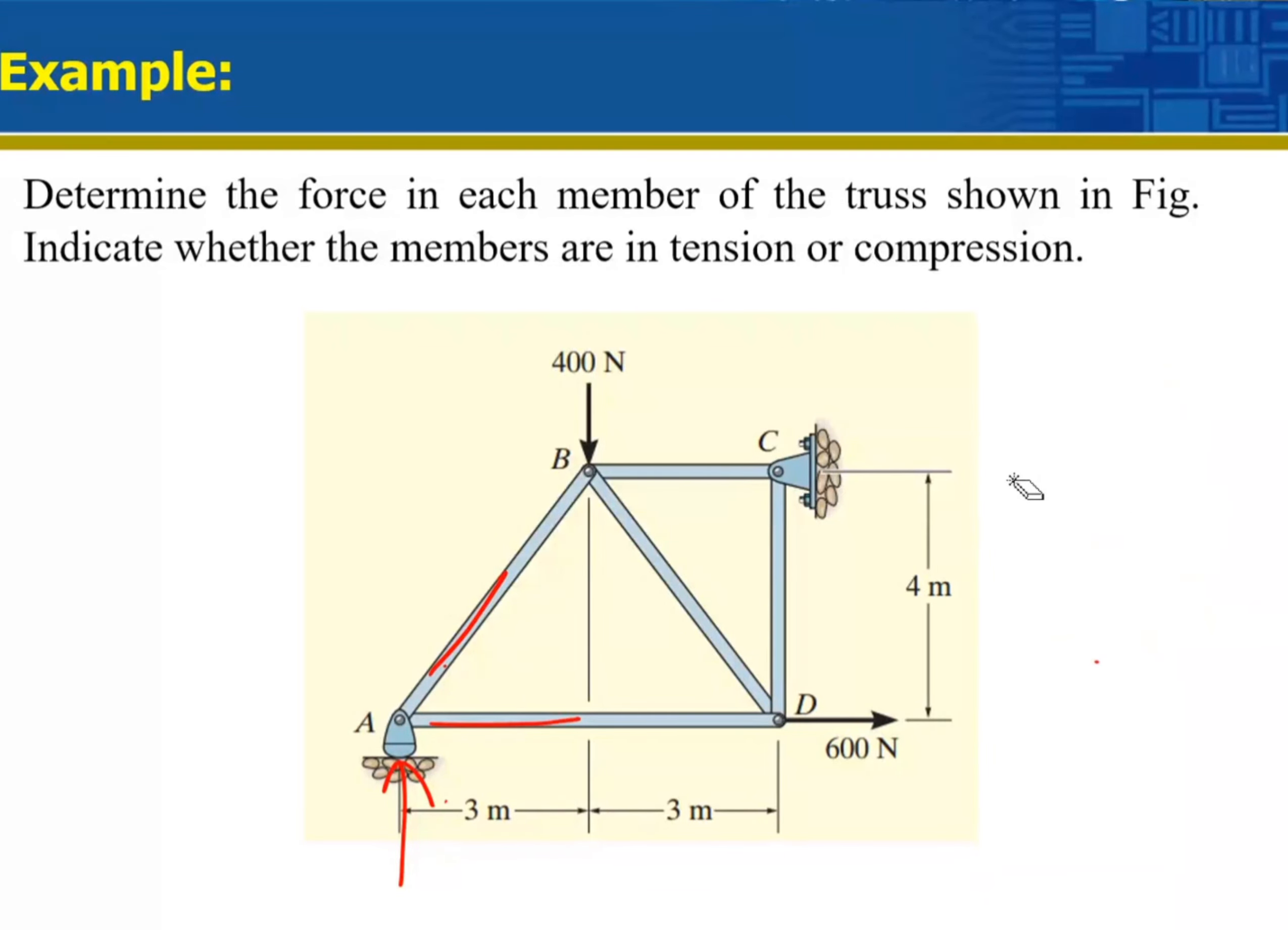Yes. If I look at this example, you're right. If I look at this, I cannot start my analysis at any point. Because to start an analysis at any joint, I need one known and a maximum of two unknowns. I cannot find any joint here which qualifies that condition. So let us look at the whole picture. What shall I do?